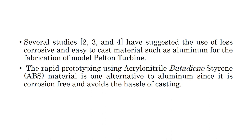Several studies from references 2, 3, and 4 have suggested the use of less corrosive and easy-to-cast material such as aluminum for the fabrication of model Pelton turbines. Rapid prototyping using acrylonitrile butadiene styrene (ABS) material is one alternative to aluminum, since it is corrosion free and avoids the hassle of casting.